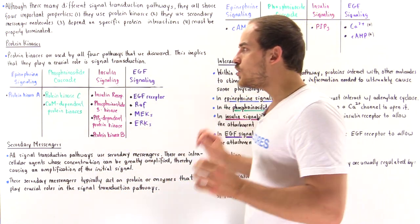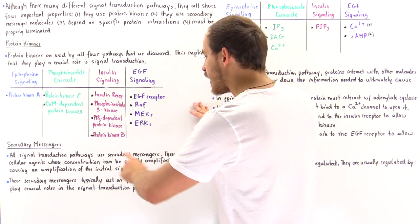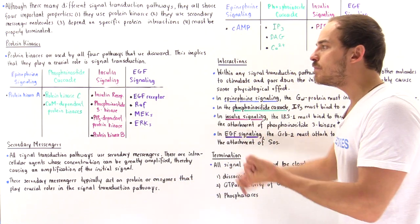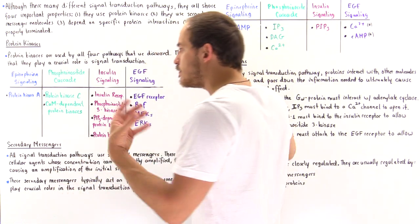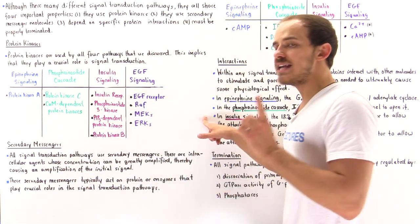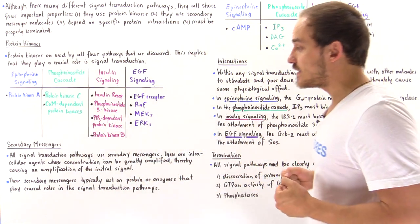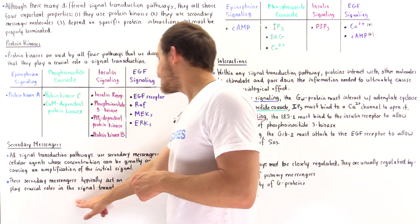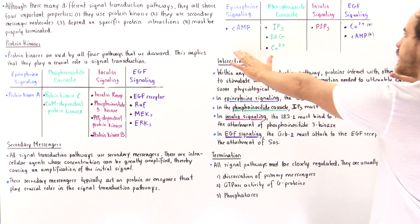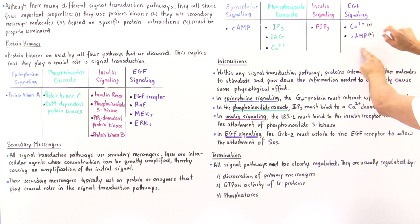Secondary messengers are also used by each one of these four different types of pathways. All these signal pathways use secondary messengers to amplify that initial signal. These secondary messengers are intracellular agents — they could be molecules or ions whose concentration can be greatly amplified, thereby amplifying the overall signal initially taken up by the cell. They typically act on proteins or enzymes that play crucial roles in the signal transduction pathways.